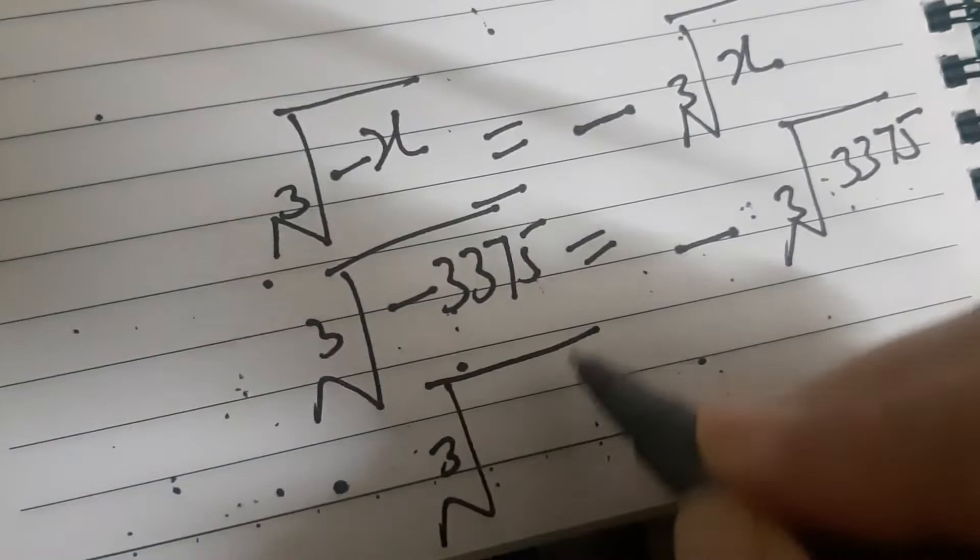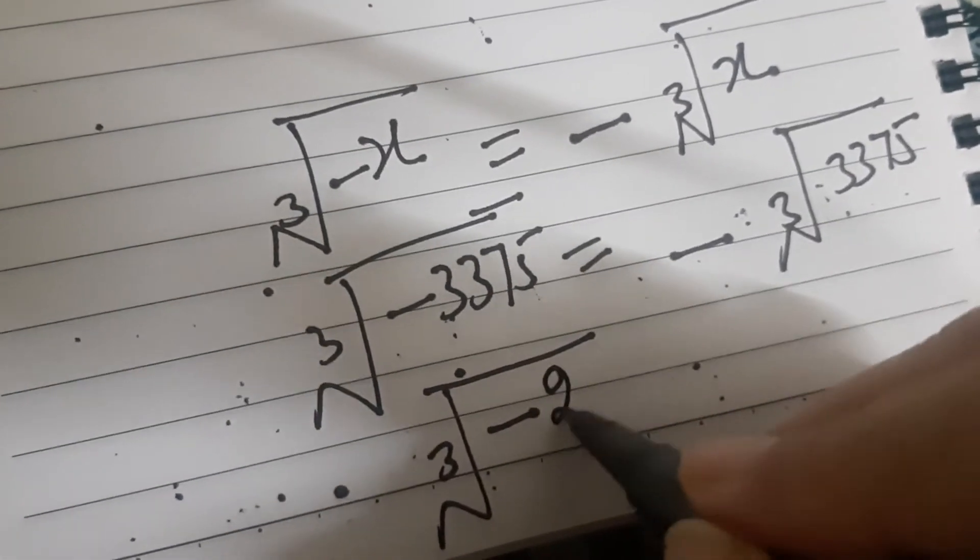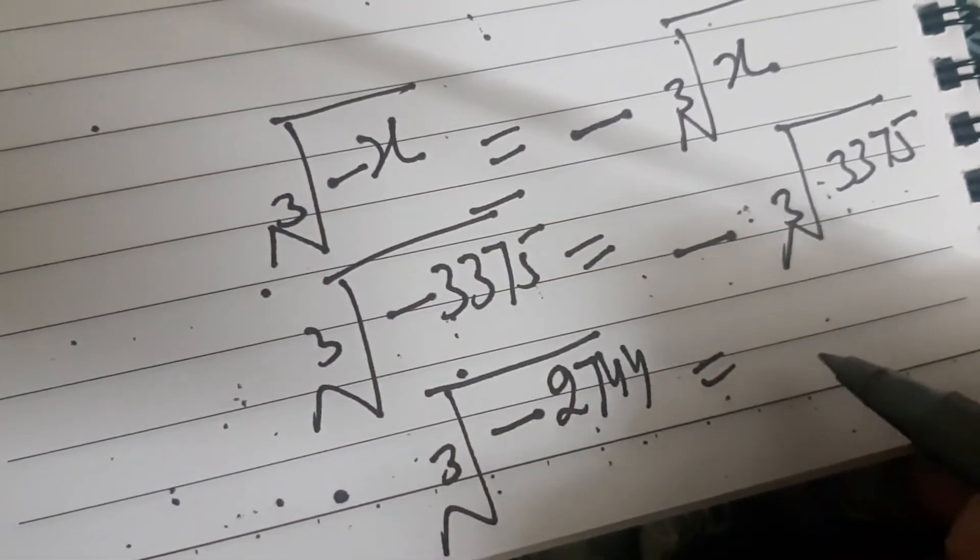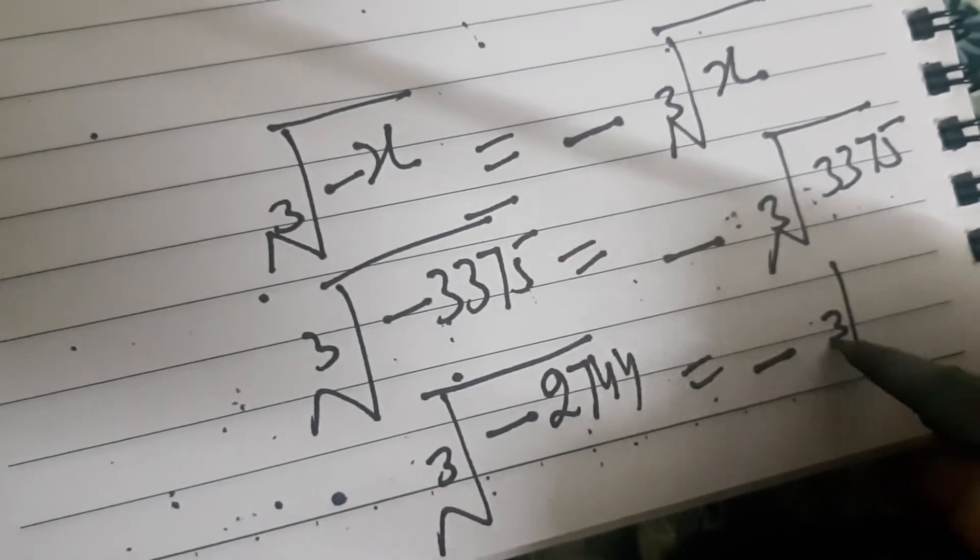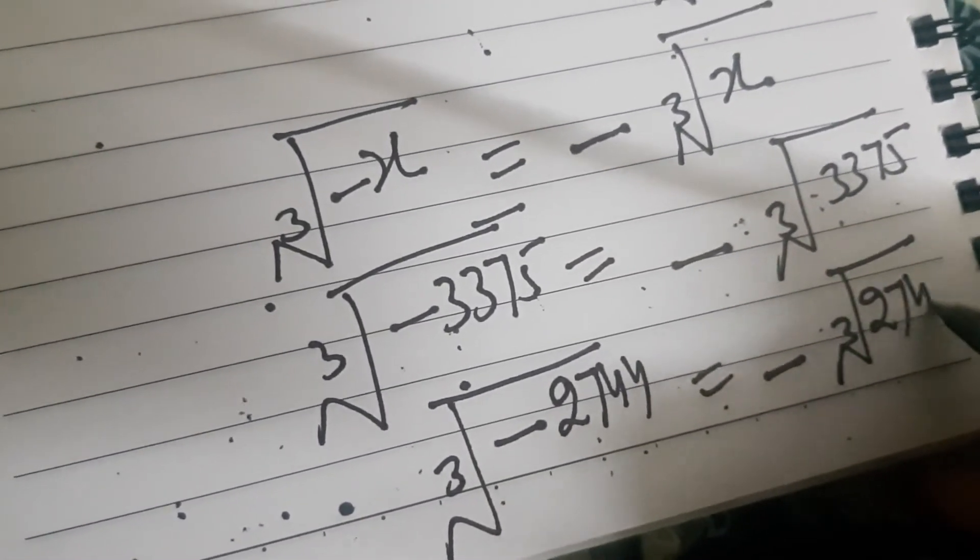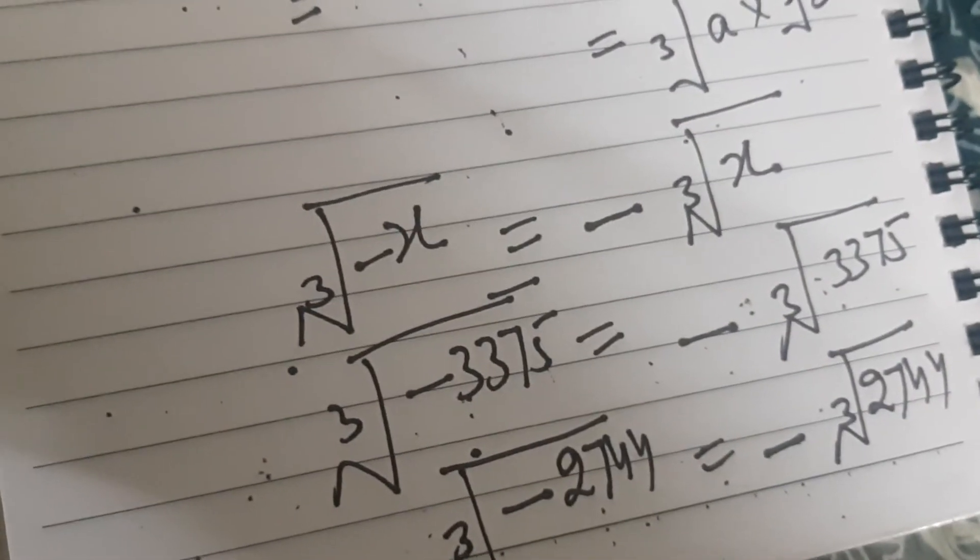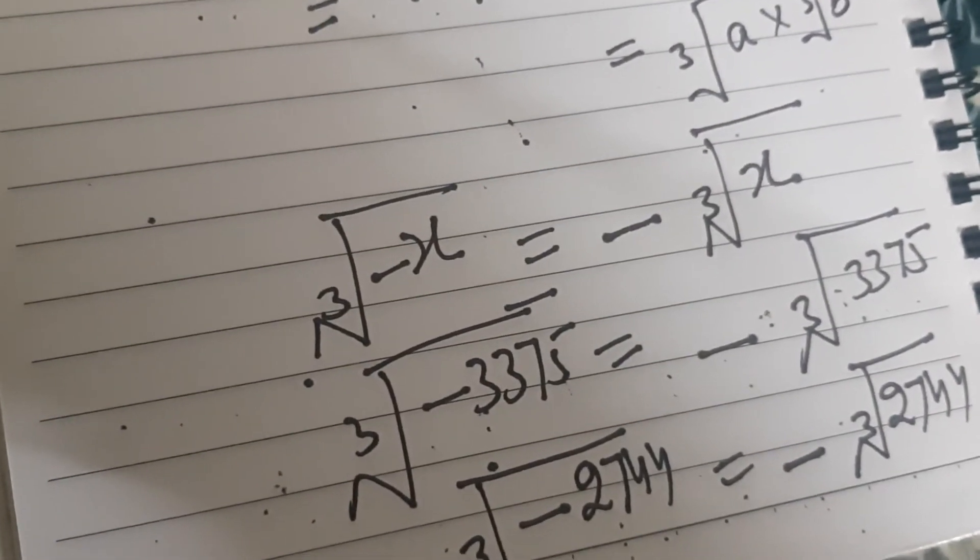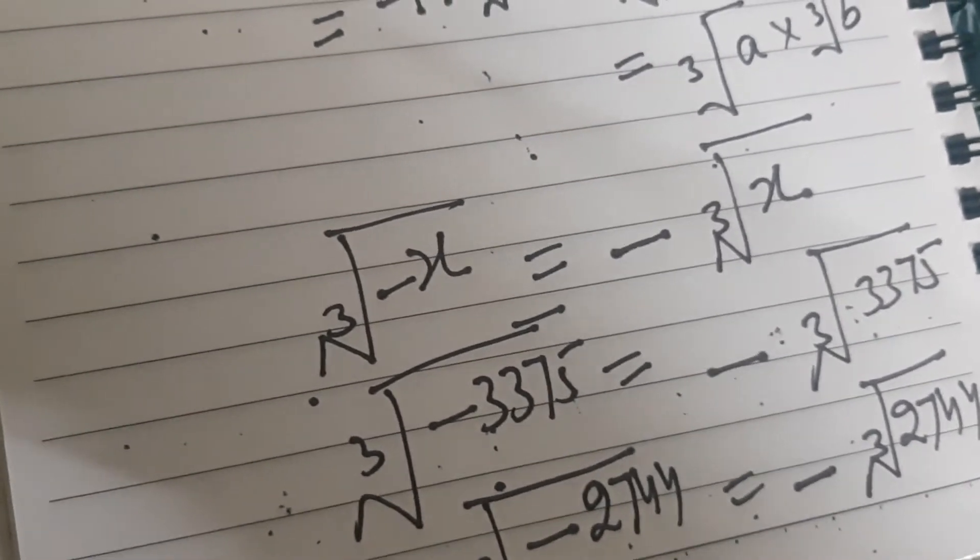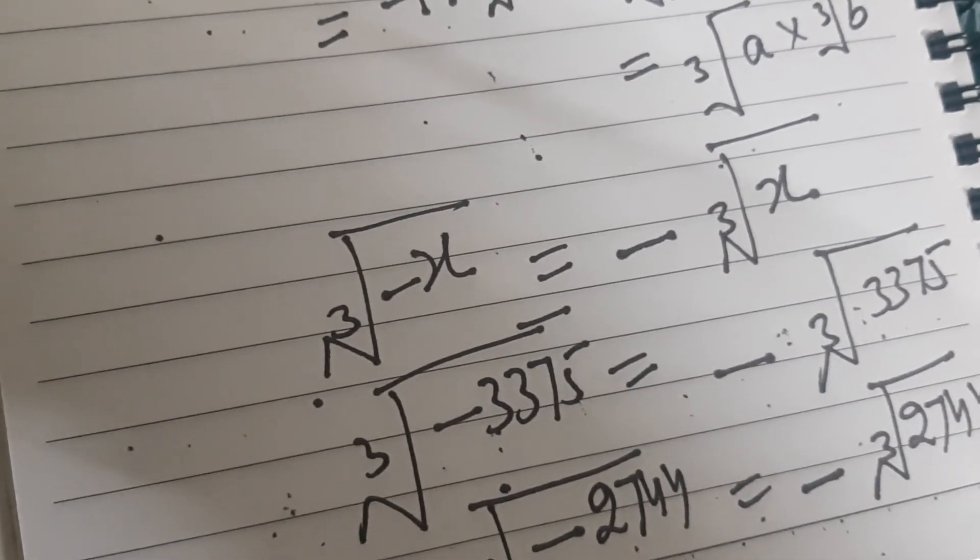Similarly, if you are asked to find out cube root of minus 2,744, this will be equal to minus cube root of 2,744. Follow the steps and you can find the answer. So this is how we write when we are asked to find cube root of a negative number.